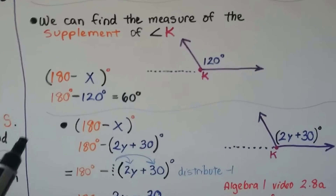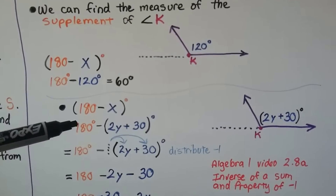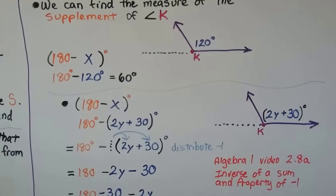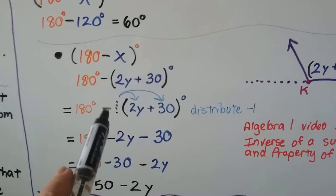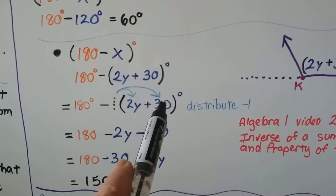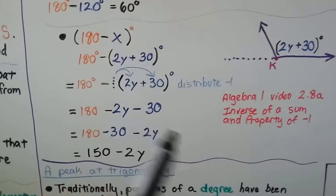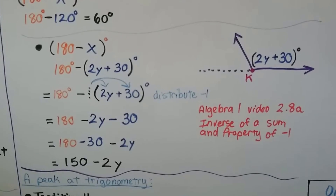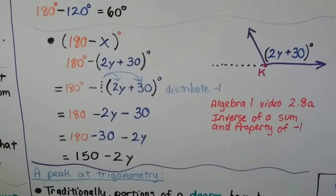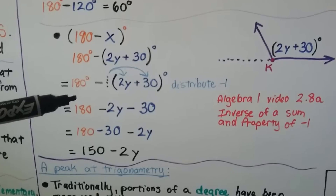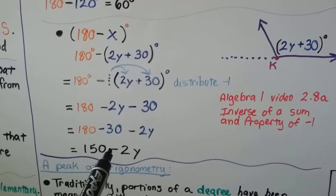If an angle measures 2y plus 30 degrees and we need to find its supplement: 180 minus (2y + 30). There's an invisible negative 1 in front of the parentheses, so we distribute: negative 1 times 2y is negative 2y, and negative 1 times positive 30 is minus 30. So we get 180 minus 2y minus 30, which simplifies to 150 minus 2y.